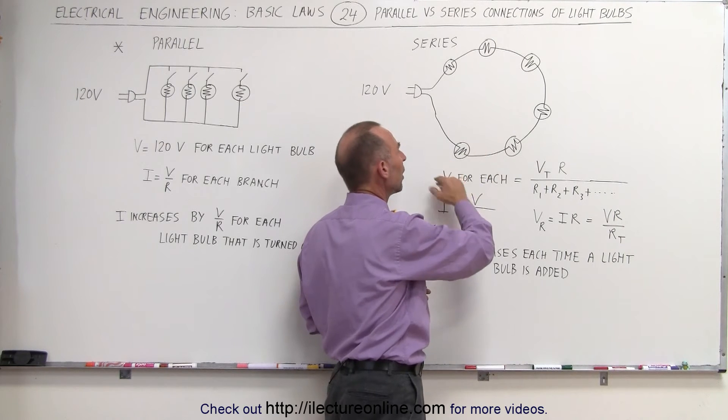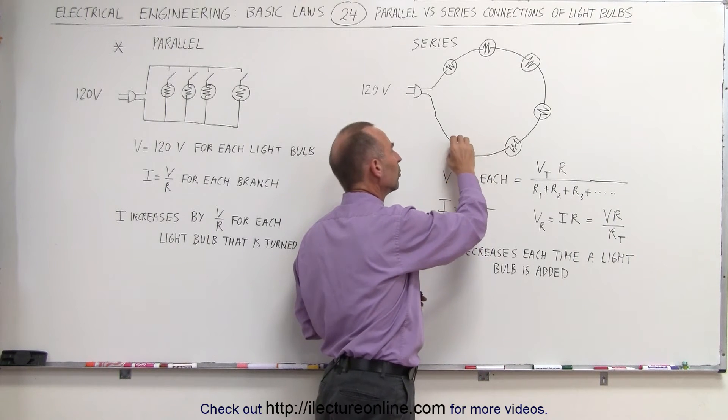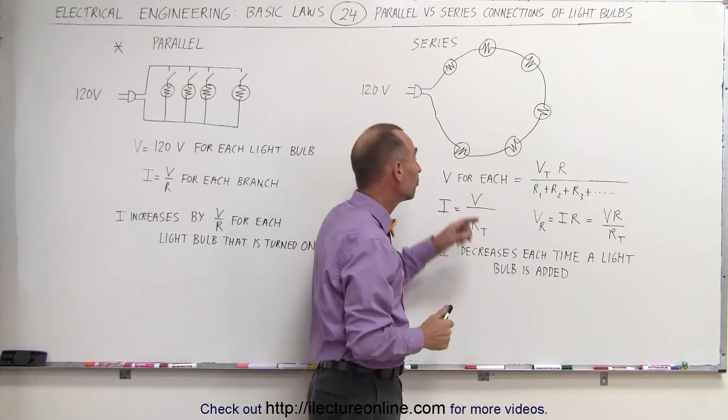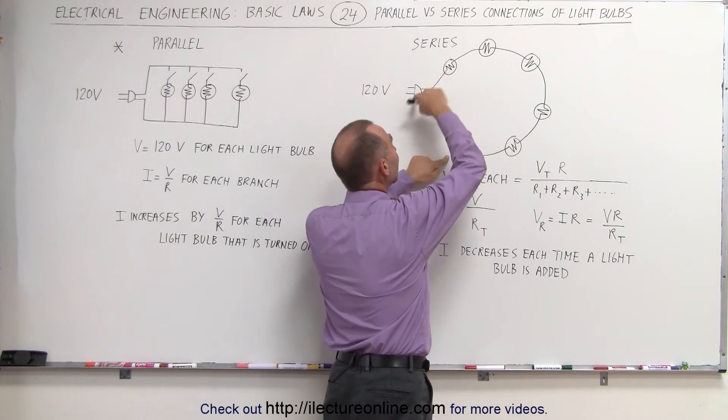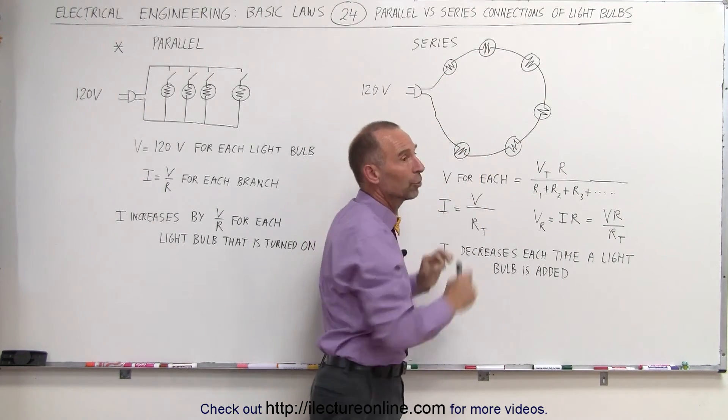Also, you cannot turn any light bulb off. If you turn off a light bulb, then it will break the circuit. For example, if you break one of these light bulbs, there no longer is a full connection on the circuit and all the light bulbs will go out.